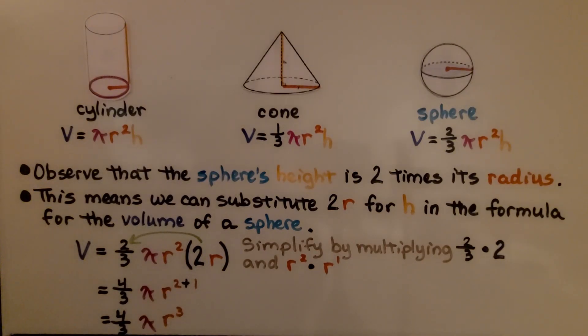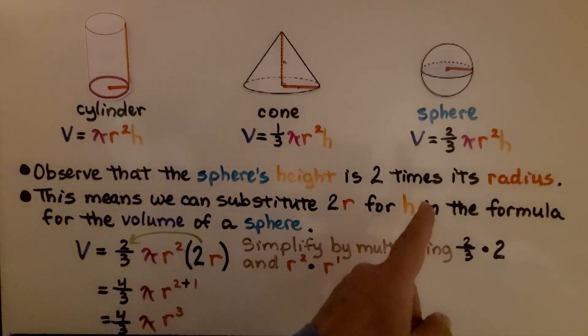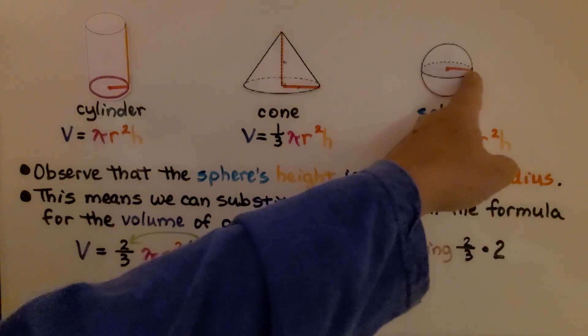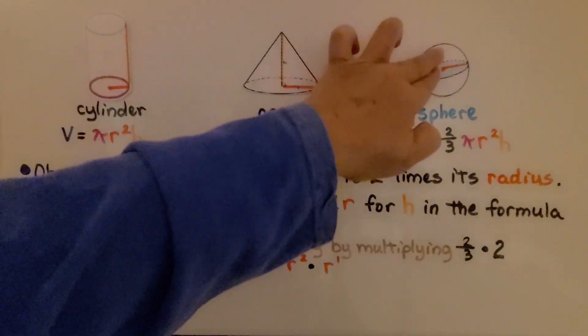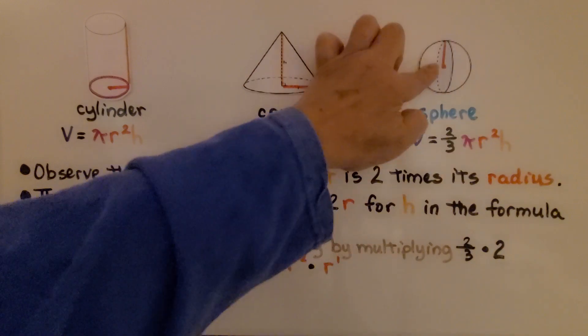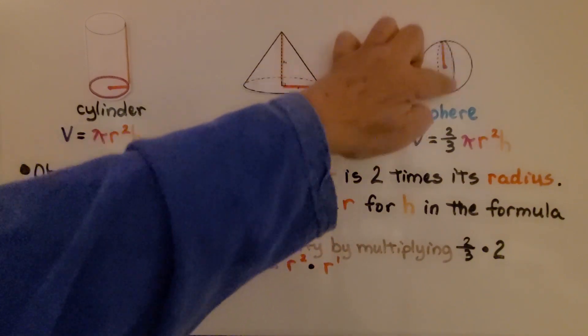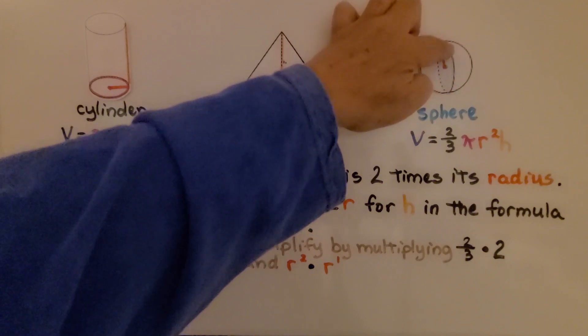Here we have our cylinder, cone, and sphere. I want you to look and observe that the sphere's height is two times its radius. So here's its radius, right? If I turn it this way and we have two radii, that would be its height. That's two r, two radius.